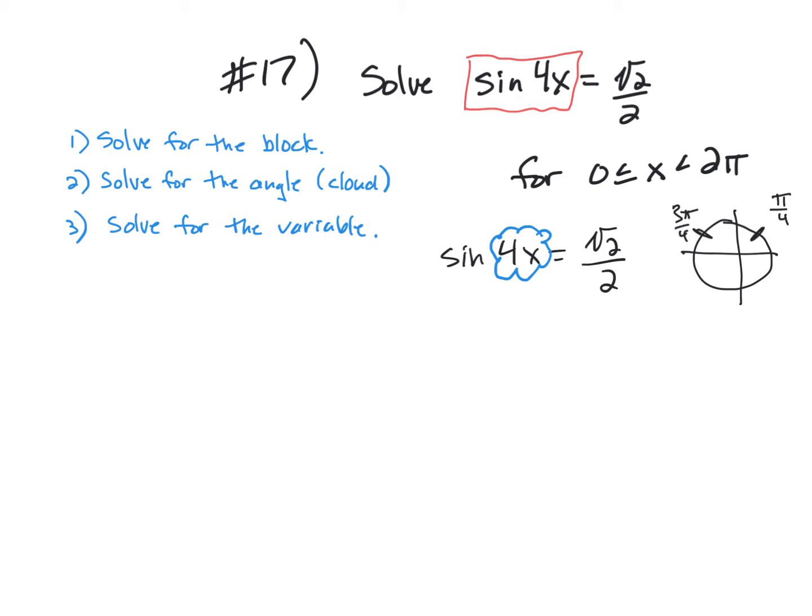and we're at 3π over 4. Because the y-coordinates of those two places are radical 2 over 2. So that means my cloud must equal π over 4, or I'm going to write it down here, the cloud must equal 3π over 4. The problem is I'm going to need more than just π over 4 and 3π over 4 because of this number. We need to check and see if there are more answers,